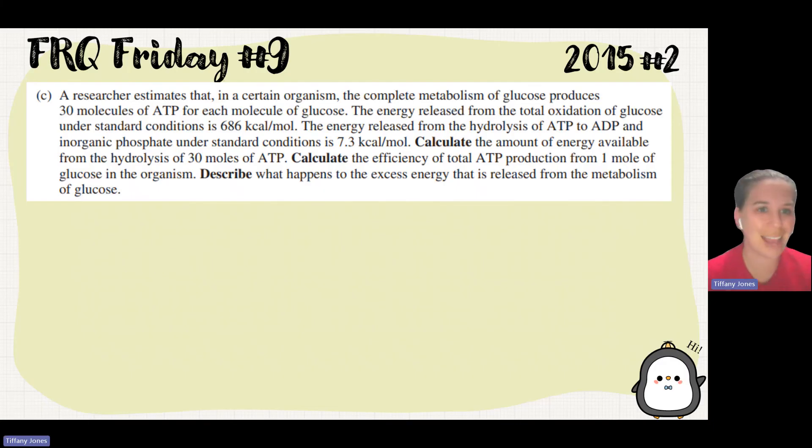And so here we bring in math. And yes, I know we all love when there's math in our FRQ questions. So let's look through this and see how we could figure this out. It tells us that the researcher estimates that a certain organism has a complete metabolism of glucose that produces 30 molecules of ATP for each molecule of glucose. The energy released from the total oxidation of glucose under standard conditions is 686 kilocals per mole. The energy released from the hydrolysis of ATP to ADP under standard conditions is 7.3 kilocals per mole.